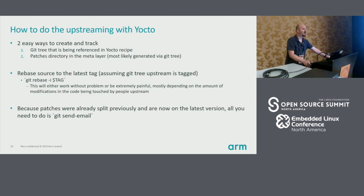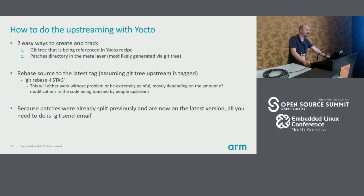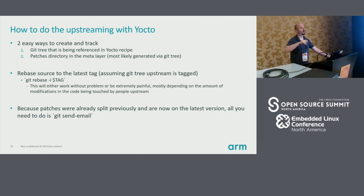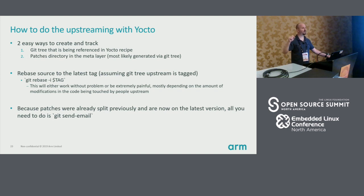So how do you upstream with Yocto? There are two easy ways, and I think one's actually easier than the other. Using a Git tree that's being referenced in the Yocto recipe — you can just update to your local Git tree in the previous recipe for the kernel, change that in GitHub and not ever modify your recipe. Each time you build, it'll keep updating, giving you the latest greatest every single time.